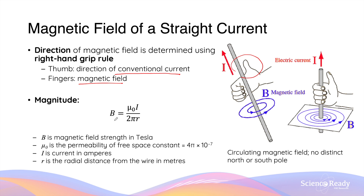The strength of this magnetic field is also given by the equation μ₀ × I divided by 2πr, where μ₀ is the magnetic permeability constant, I is the current in amperes going through the conductor, and r is the radial distance away from the straight conductor.